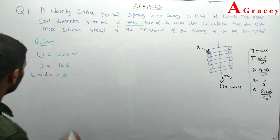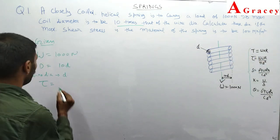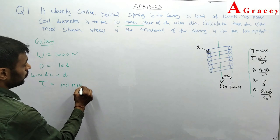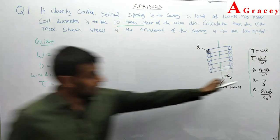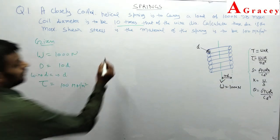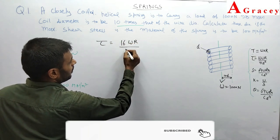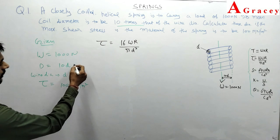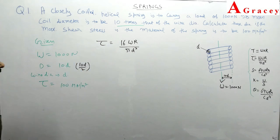Calculate the diameters if the maximum shear stress in the material is 100 mega newton per meter square. So tau = 100 MN/m² is given. From the shear stress formula: tau = 16Wr / (pi × d³). The mean radius r = D/2 = 10d/2 = 5d.